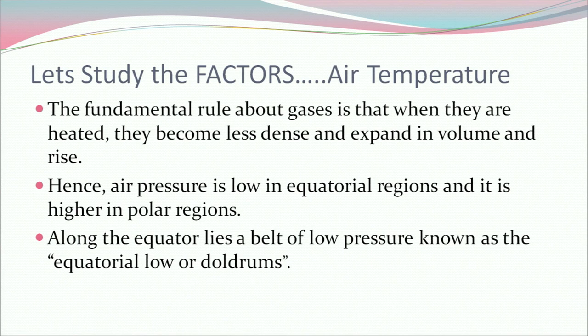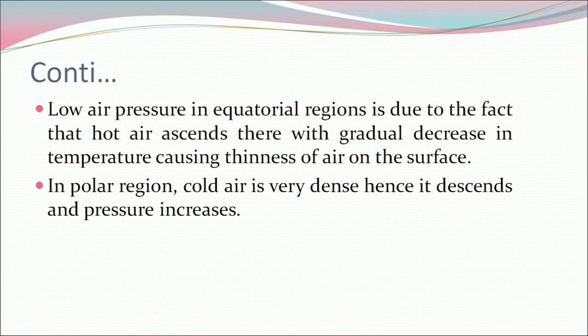Now let's study the factors. First, air temperature: the fundamental rule about gases is that when they are heated, they become less dense, expand in volume, and rise. Hence air pressure is low in the equatorial region and higher in polar regions. Along the equator lies a belt of low pressure known as the equatorial low or doldrums. The low air pressure in the equatorial region is due to hot air ascending there, with gradual decrease in temperature causing thinness of air on the surface.